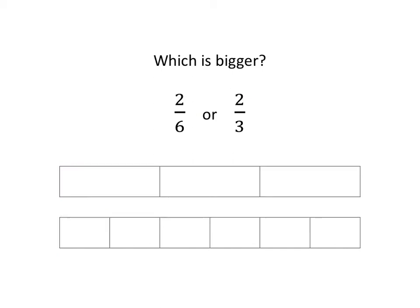Again, have a look and decide which is bigger, two-sixths or two-thirds. Pause the video and decide. Hopefully you immediately said, we've just looked at the fact that one-third is bigger than one-sixth. So obviously if I have two-thirds, which are just two of the thirds, it'll be bigger than two of the sixths. But we can draw a picture as well.